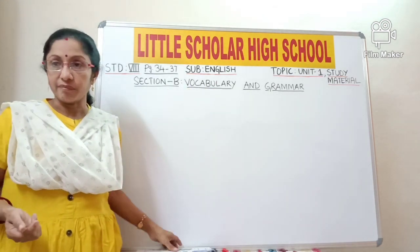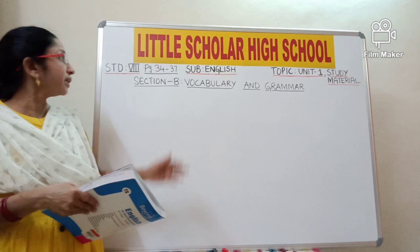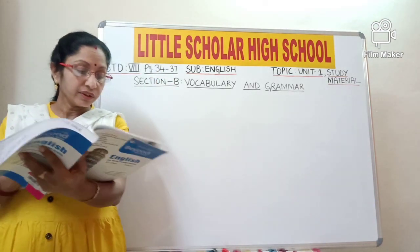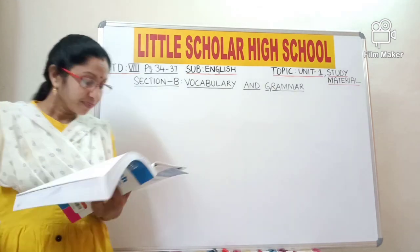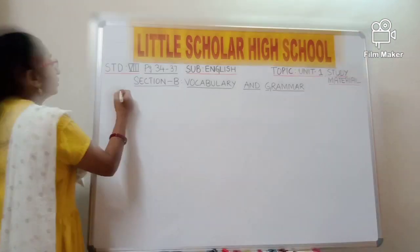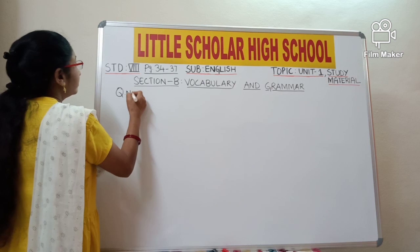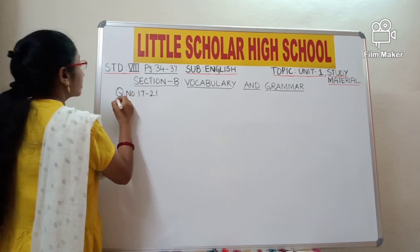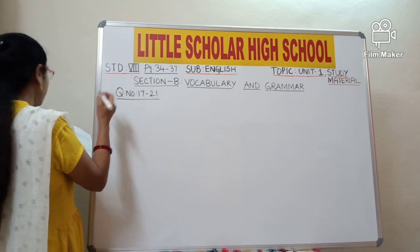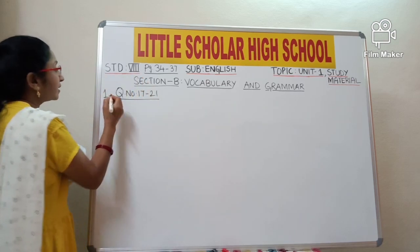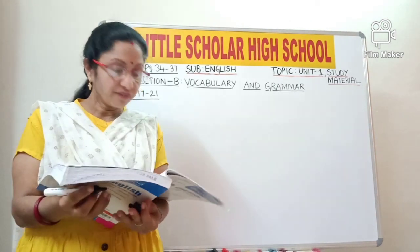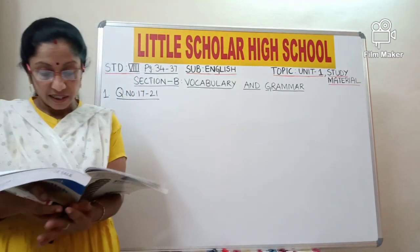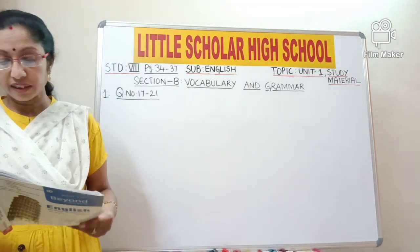Now let us see how to do this — Section B, Vocabulary and Grammar. I want all of you to turn to page number 34 of your study material. Question numbers 17 to 21 are covered in this section B. Let's do Passage 1: Read the following passage focusing on the parts underlined and answer the questions given at the end as directed.